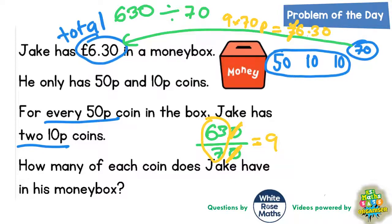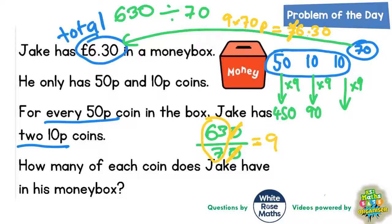We need to multiply each of these coin values by 9. So 50 times 9, and 10 times 9, and 10 times 9 — this will build up to our £6.30. 50 times 9: 9 times 5 is 45, put the 0 on the end gives 450. 9 times 1 is 9 with a 0 on the end gives 90. And 9 times 1 is 9 with another 0 on the end gives another 90.